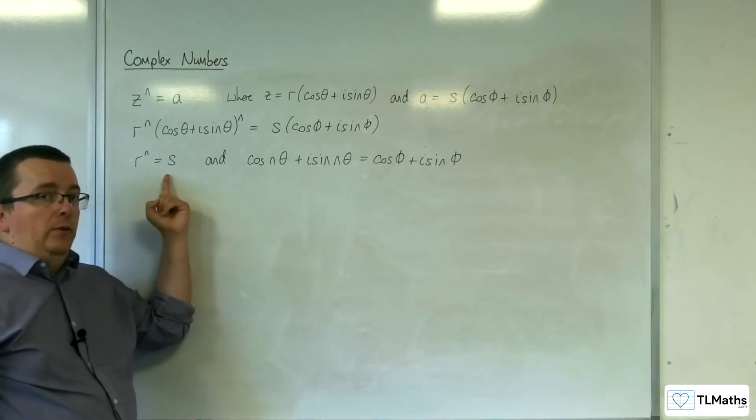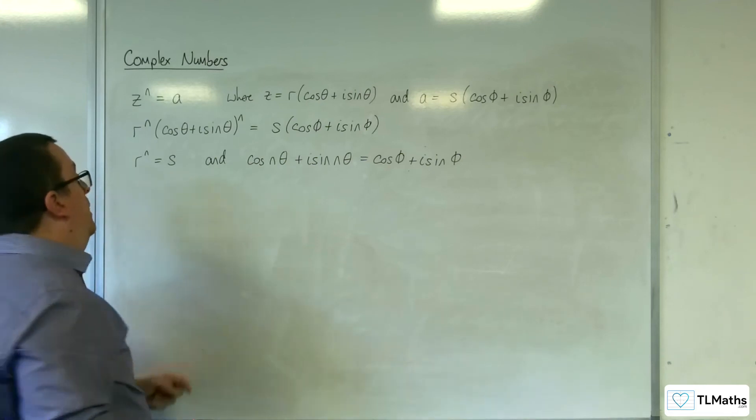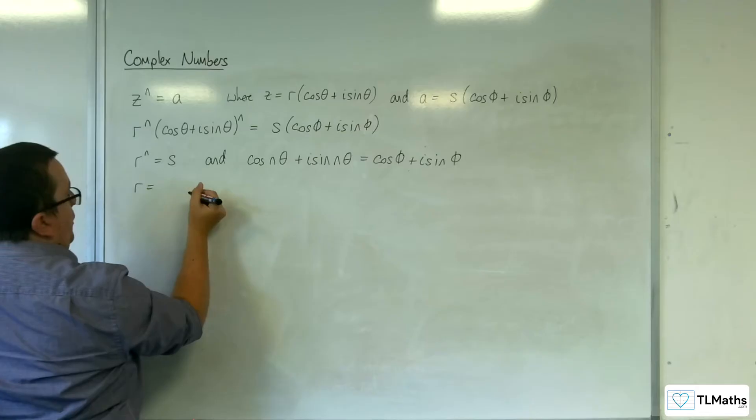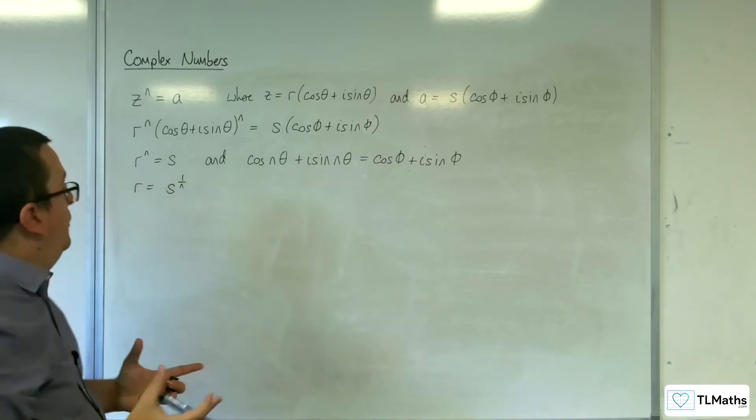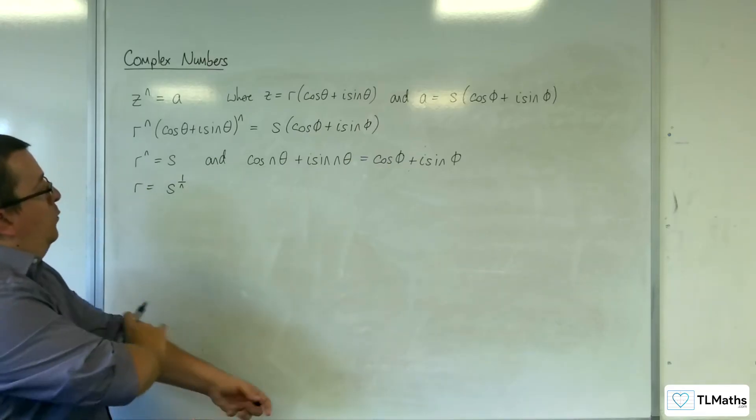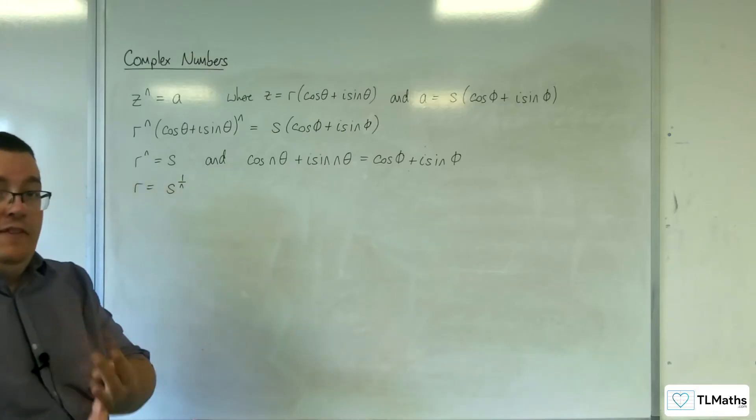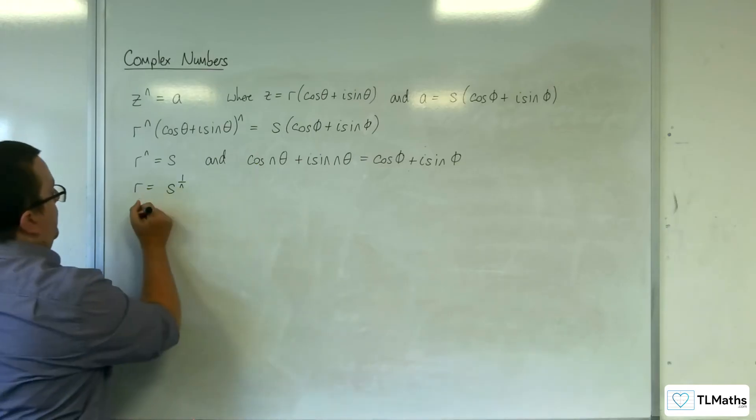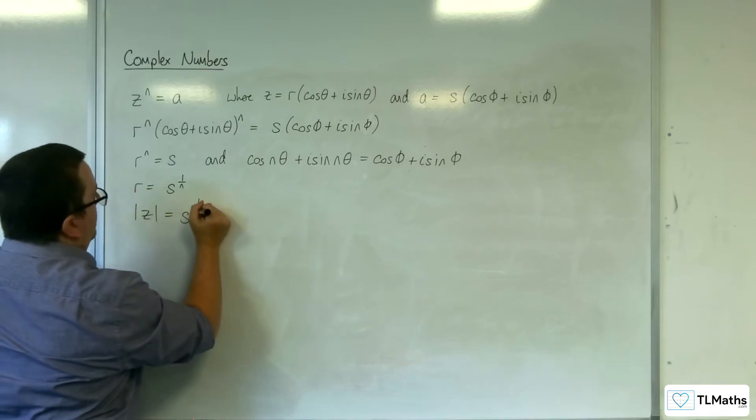r to the n equals s. Now remember, these are real, so r must be equal to the nth root of s, so s to the power of 1 over n, and that's unique. So we know that the modulus of z must be s to the 1 over n. The modulus of z must be equal to s to the power of 1 over n.